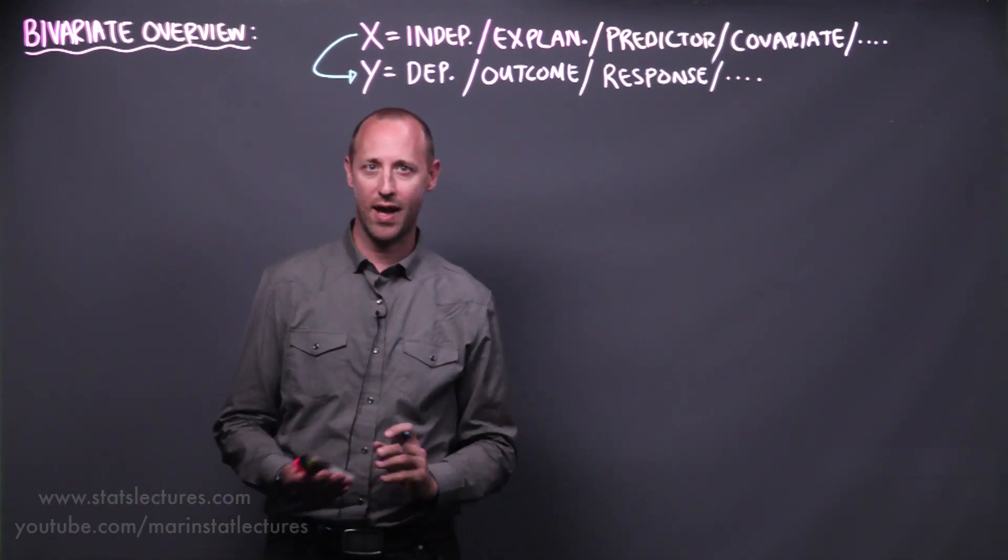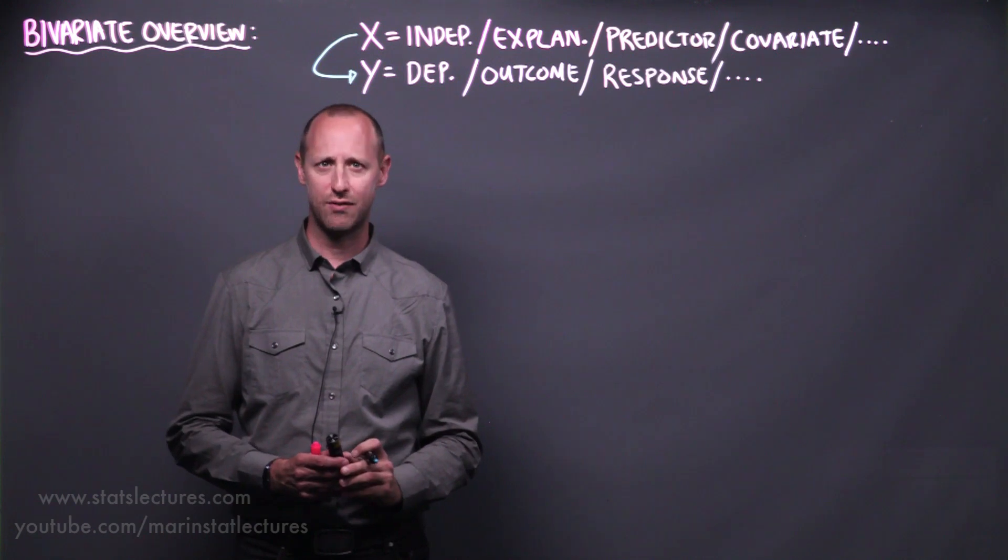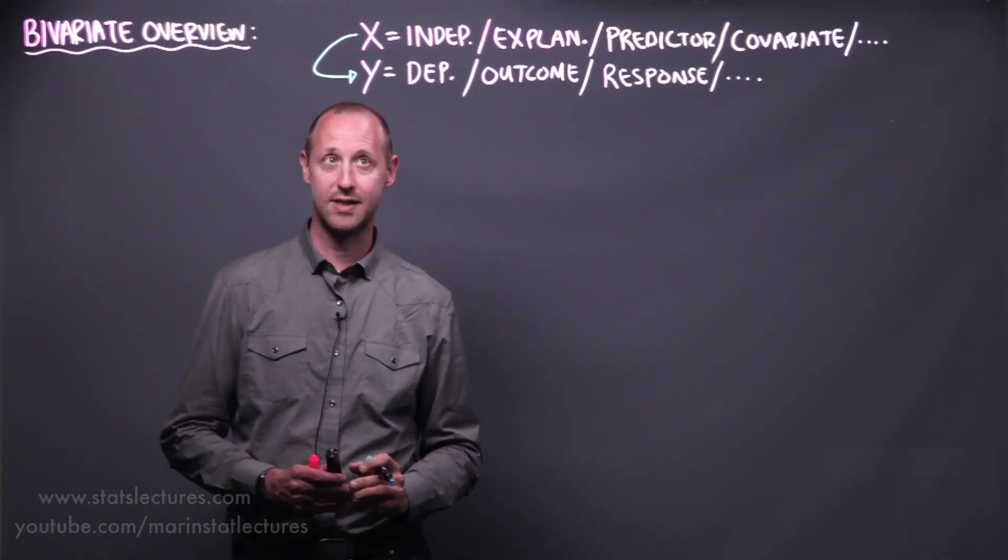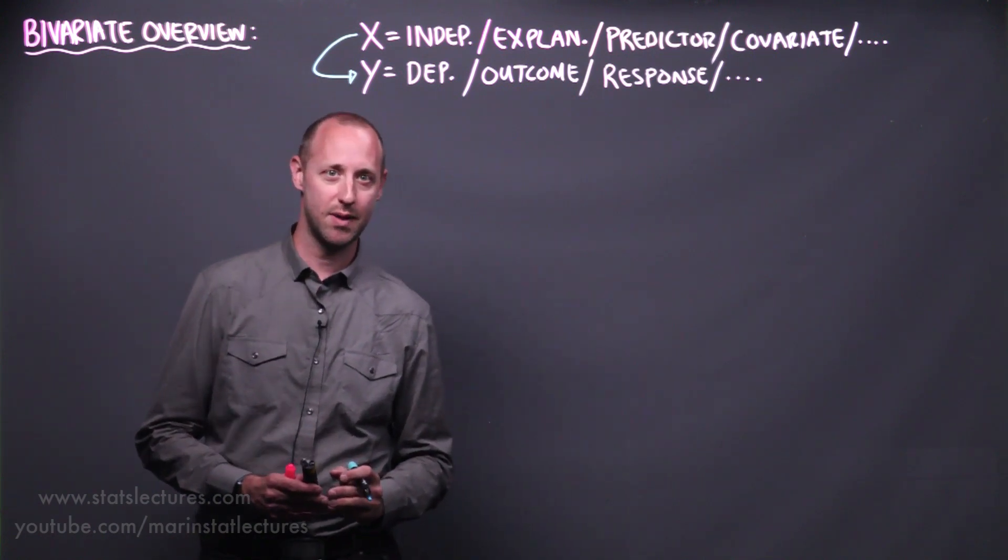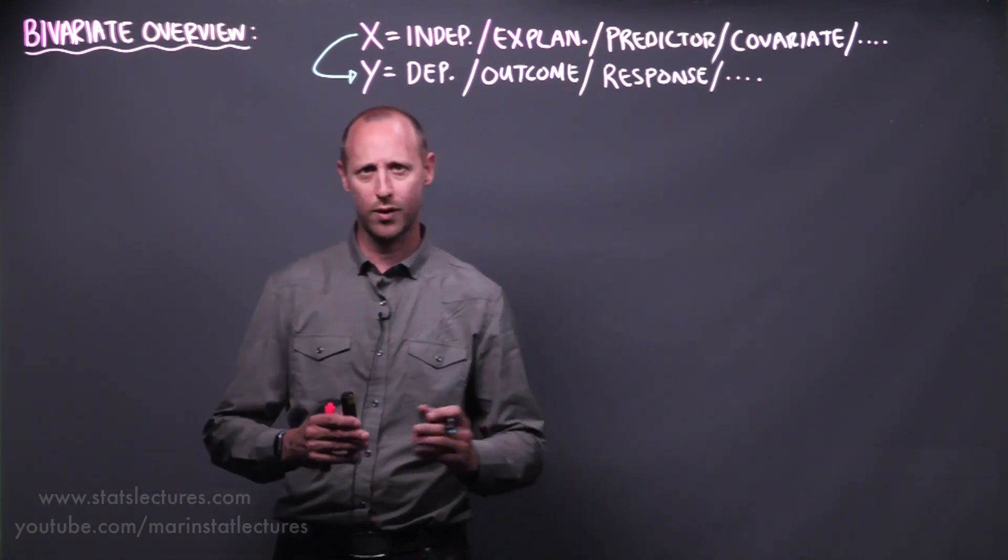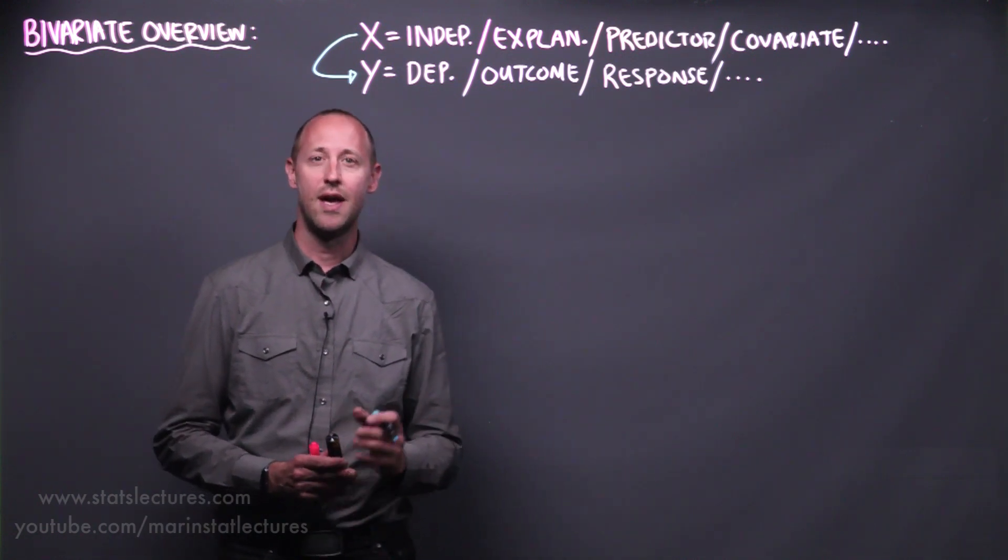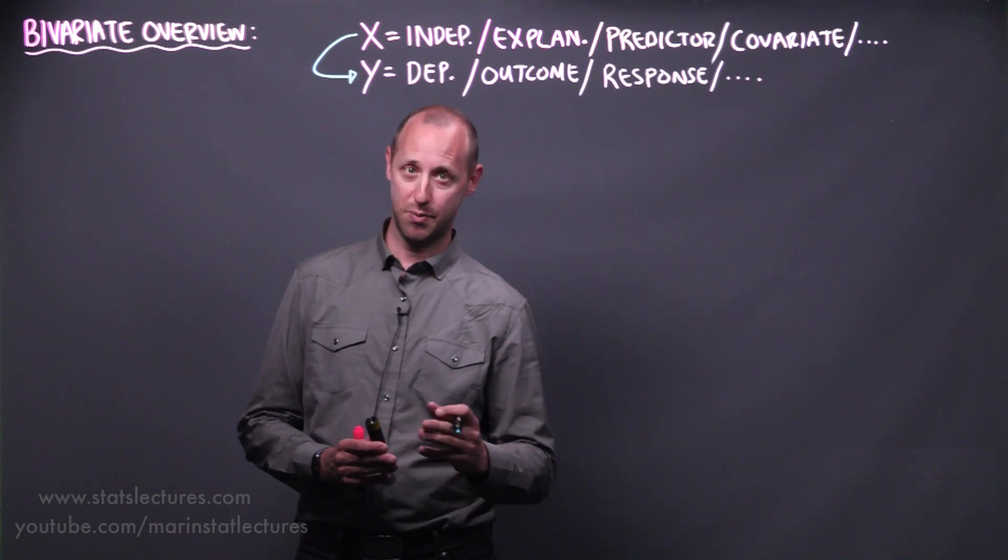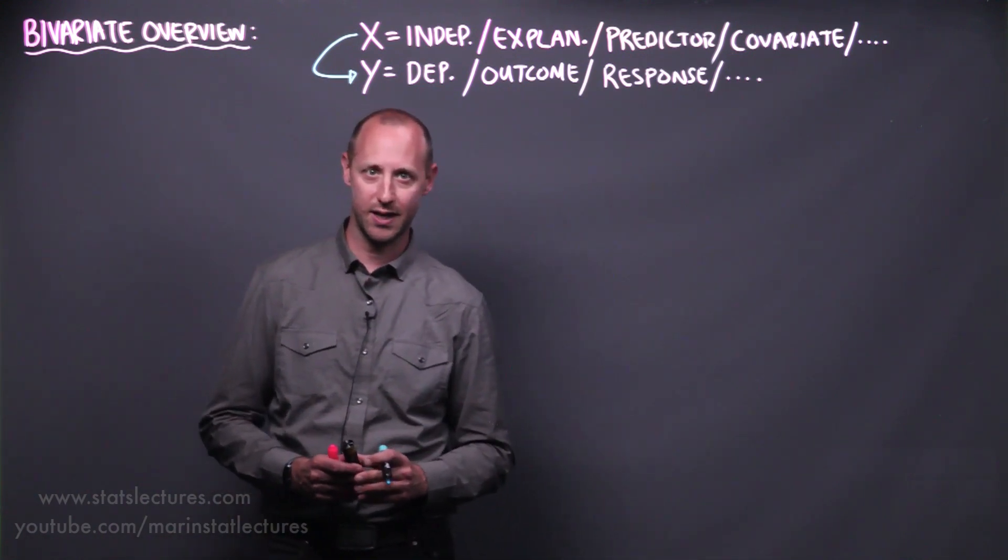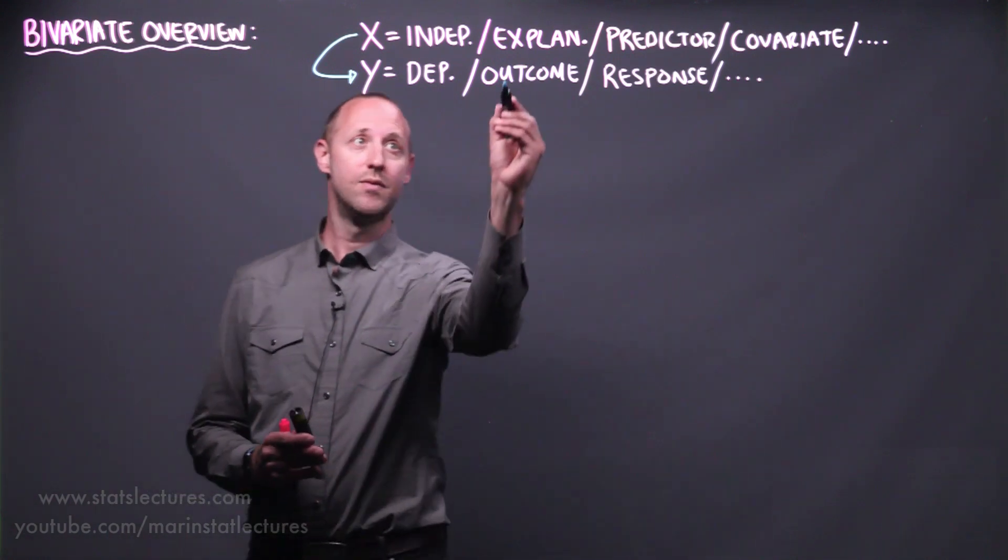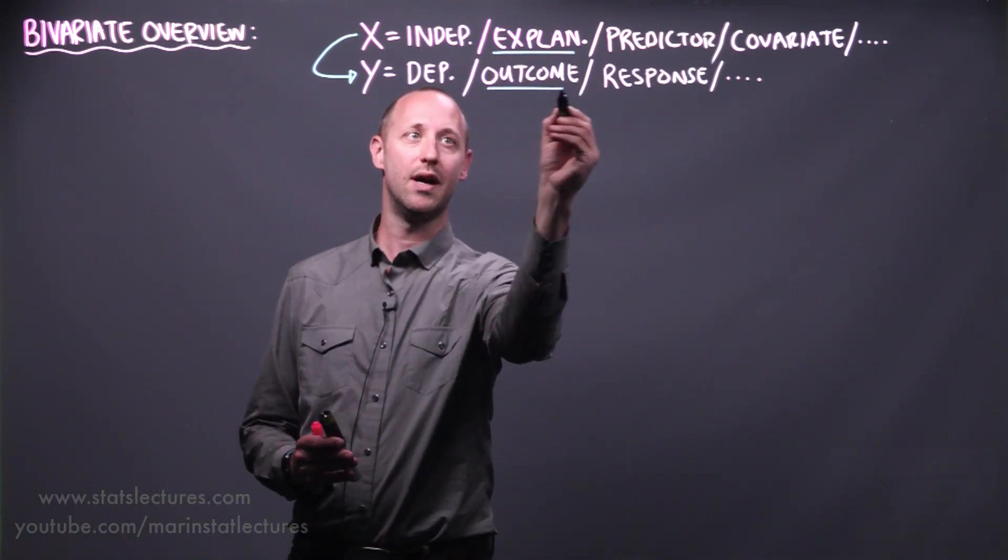What we call x or y, we have a bunch of different names. The x variable is most generically the independent variable, or sometimes it gets called the explanatory, the predictor, or the covariate. And y is the dependent variable, or the outcome or response. I'll generally alternate between using x and y or calling them the explanatory and outcome variables.